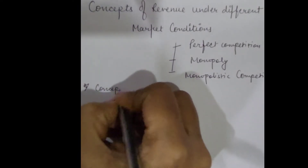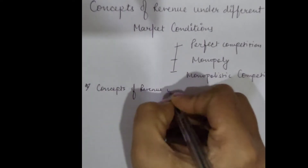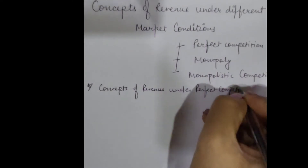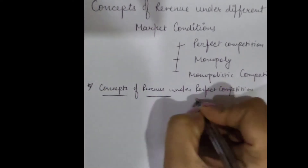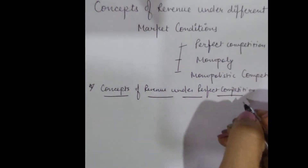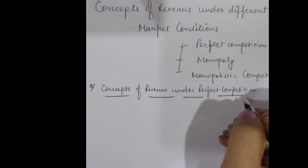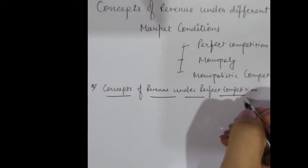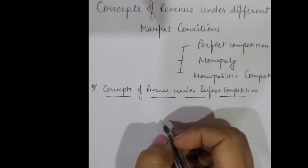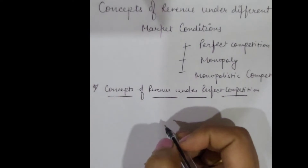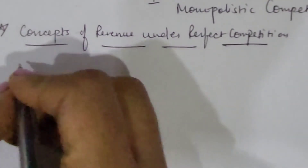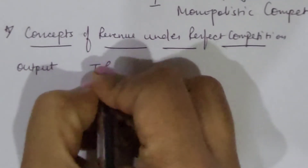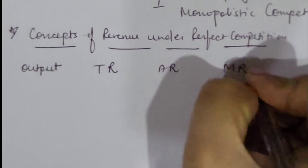Starting with concepts of revenue under perfect competition. Perfect competition is a market situation in which there are a large number of buyers and sellers selling homogeneous products at a uniform price. So all three concepts of revenue — TR, AR, and MR — are described accordingly. Let's take a table where output, total revenue, average revenue, and marginal revenue are shown.